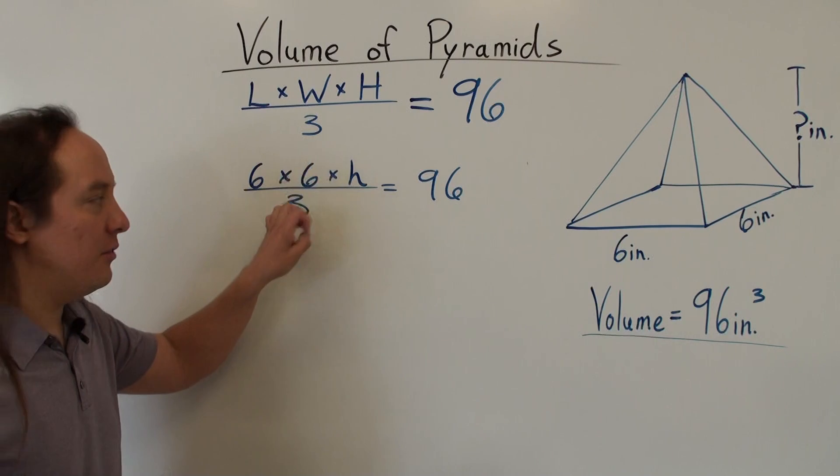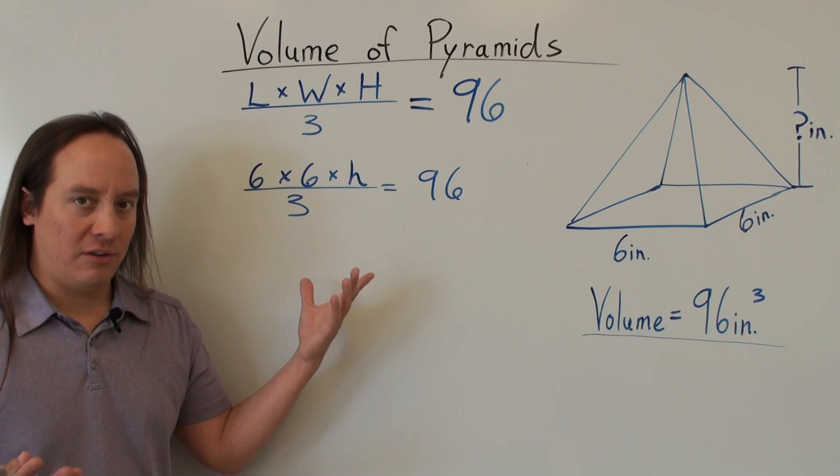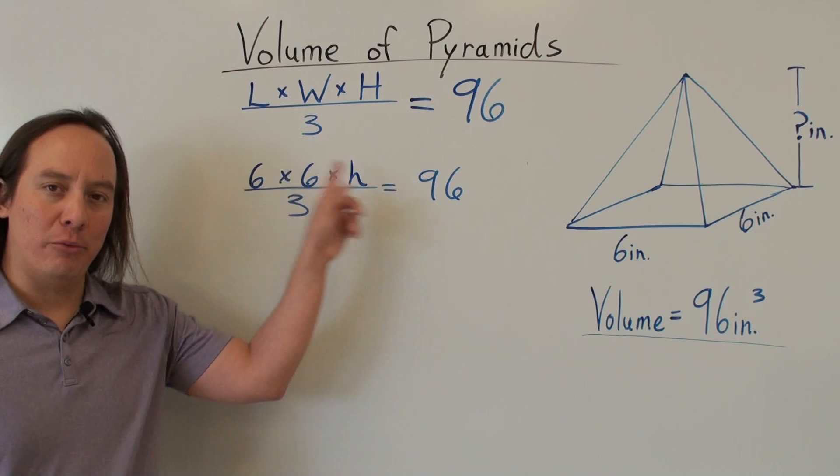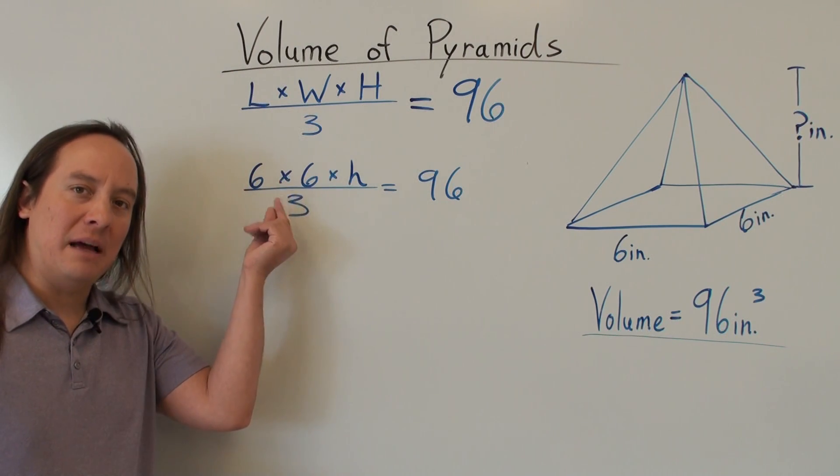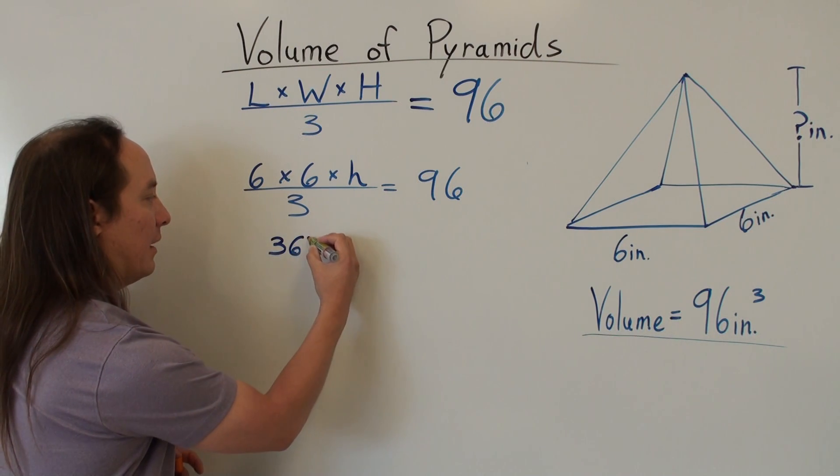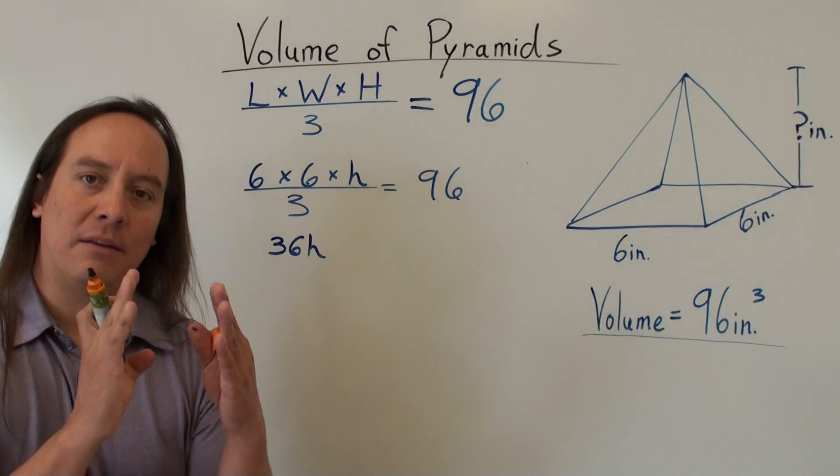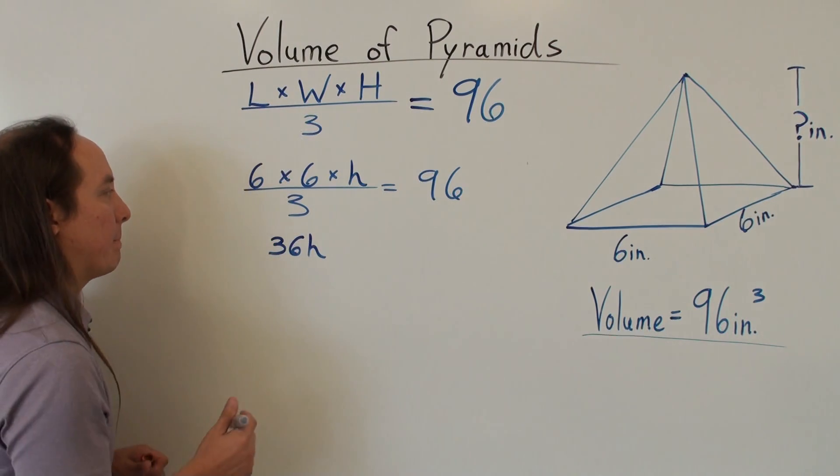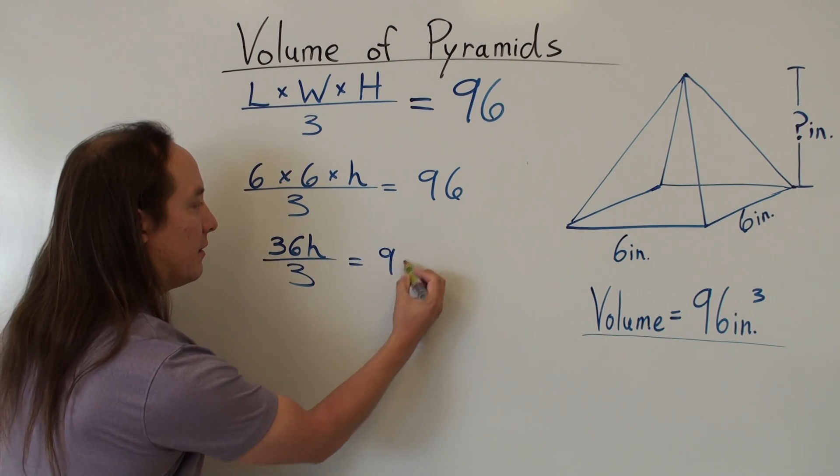Now there's a couple of things we can do. We can simplify this expression first, or get rid of this fraction first. It's up to you guys. I guess we can just simplify. So we can simplify the numerator a little bit. Instead of six times six times h, I can actually multiply the six times six. So six times six is 36. And now I'm just going to write it like more of an algebraic expression, just putting the 36 right next to the h to signify that it's multiplied. And divided by three is equal to 96.